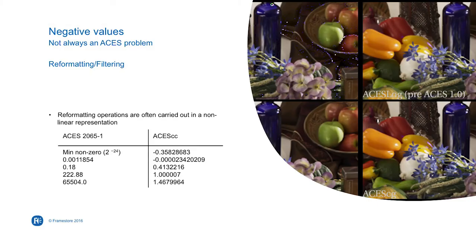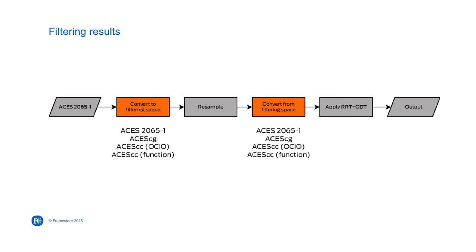Why is it a problem for negative values for some vendors? Here's an example of what happens when you try to do some range compression to avoid ringing artifacts when you're resampling files. I basically took a bunch of ACES-originated material, converted it to a different color space for filtering, filtered it, converted it back, and then displayed it. So if you're using ACES — the big, contains-everything, linear color space — and you look carefully on the blue flowers, there are some ringing artifacts.